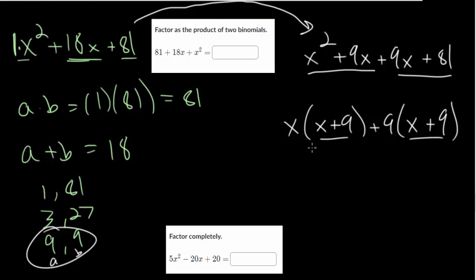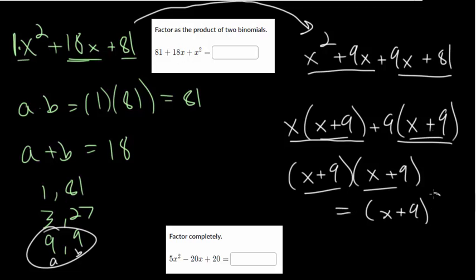So in both of these terms, this one and this one, we can factor out that x + 9. And what we're left with here is an x and here is a positive 9. And since you got the same term twice, that's one clue that you're on the right path. So we factored this into (x + 9)².